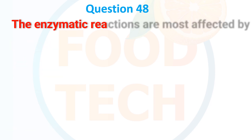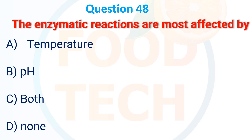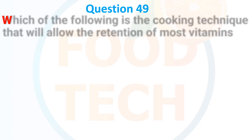Question 48. The enzymatic reactions are most affected by: A. Temperature. B. pH. C. Both. D. None. The correct answer is C: both.